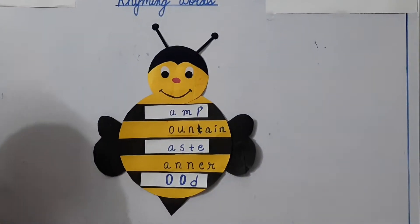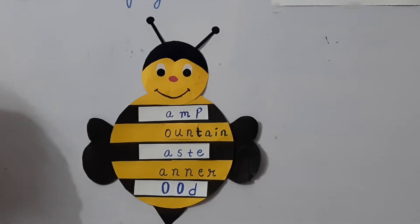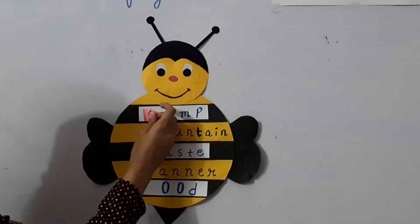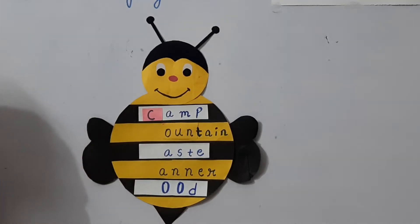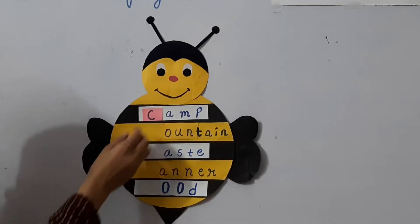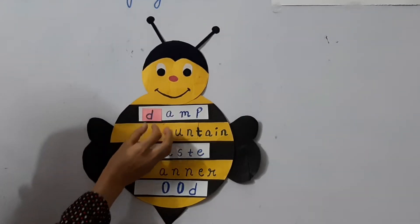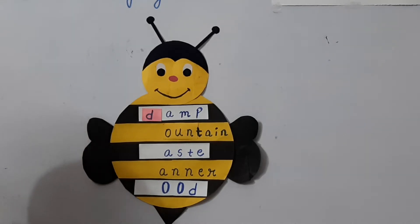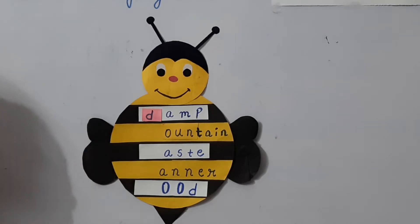For example, look at the board children. Now I am going to tell you a few rhyming words. The first one — if I add C, what will it become? C-A-M-P, camp. And if I add D, what will it become? D-A-M-P, damp. So camp and damp both have the same ending sounds, but their meaning is different.